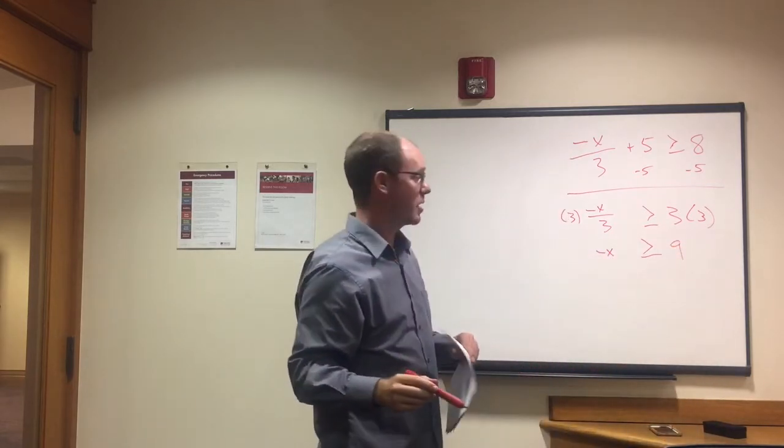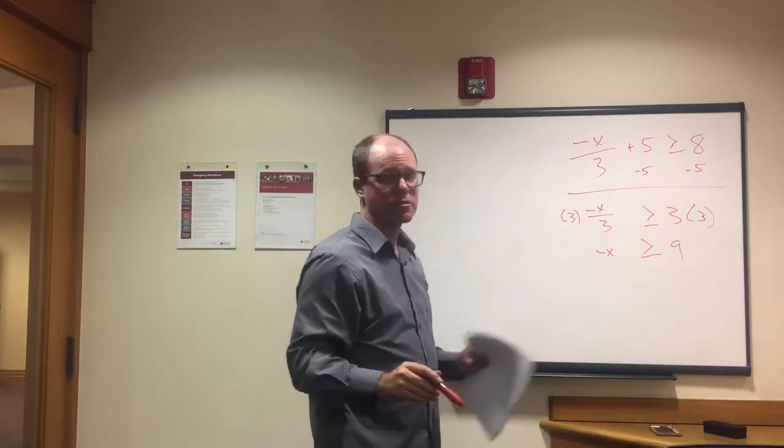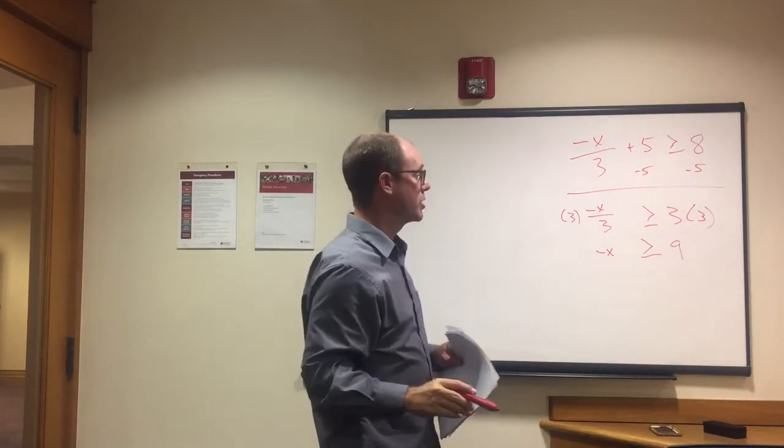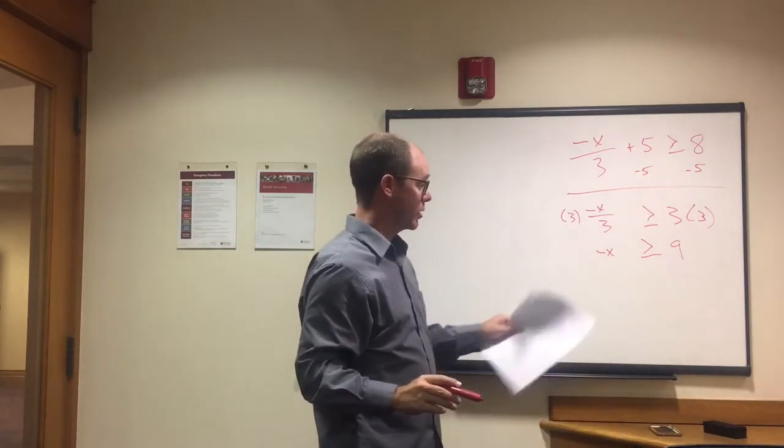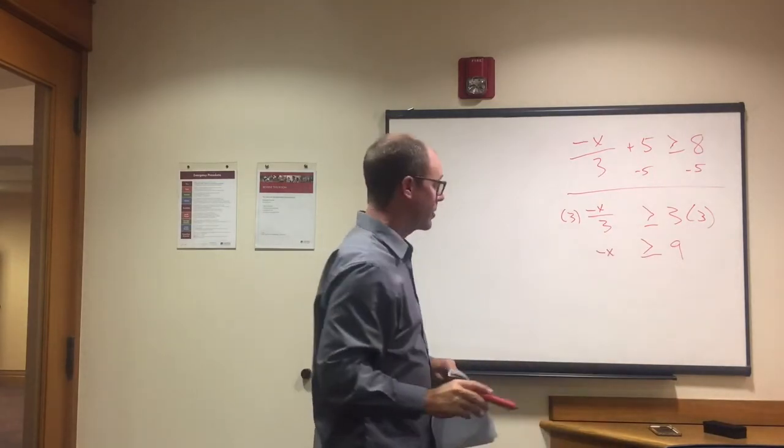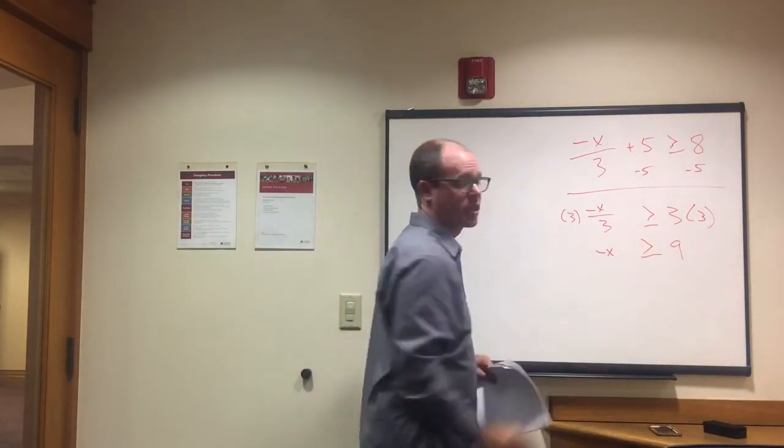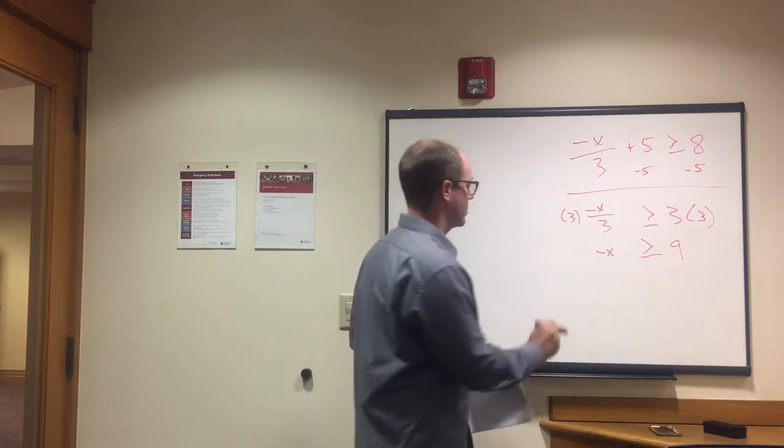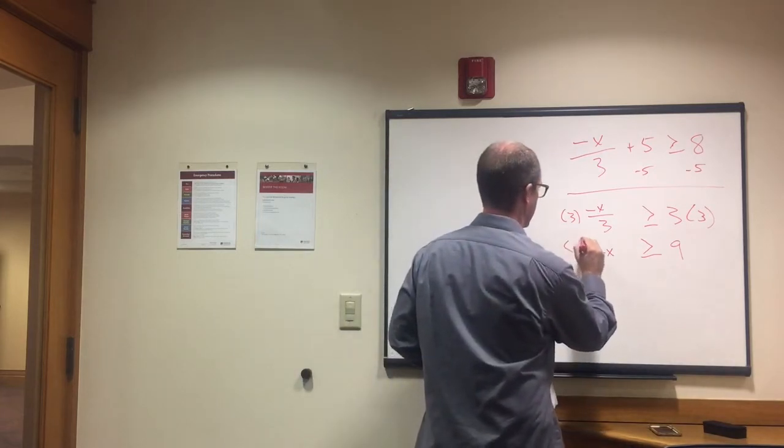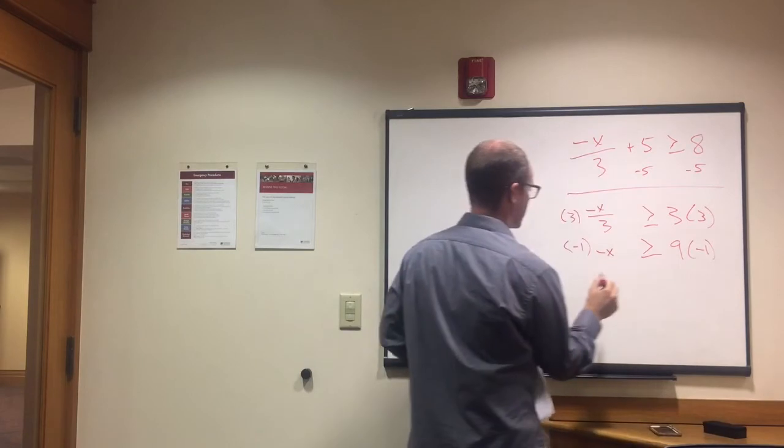Okay. Almost there. We just need to make this positive. And the way we're going to do that is multiply each side by -1. When we do that, that flips the sign for both of these. But it also will flip this greater than or equal to sign. So let's see what that looks like. Times -1. Times -1.